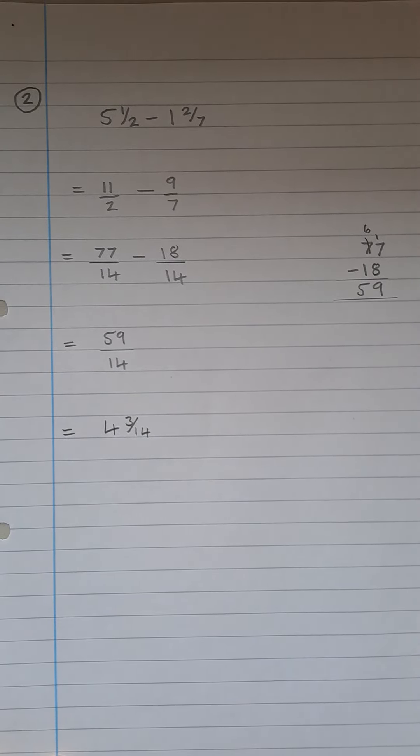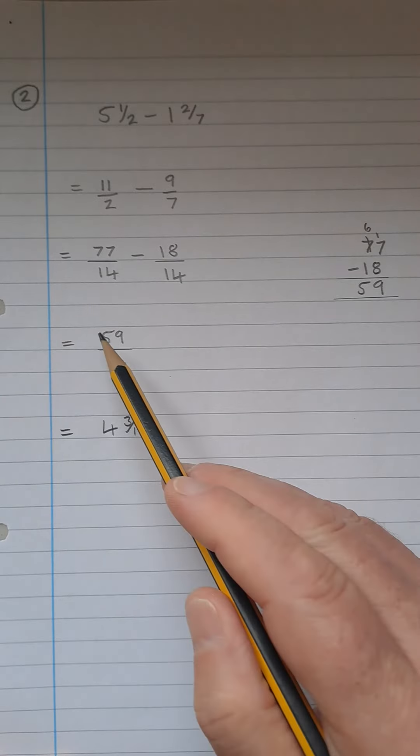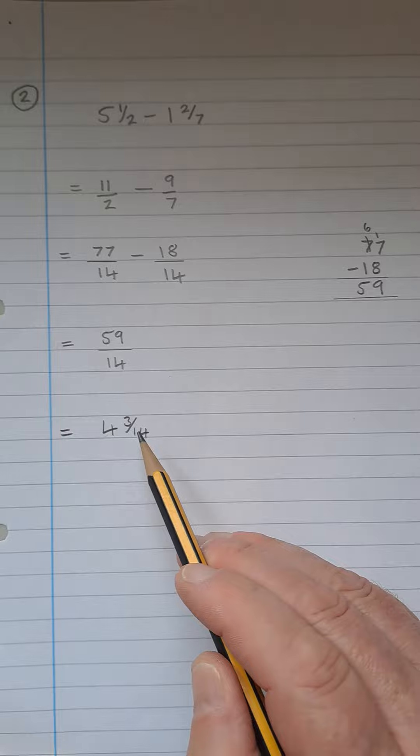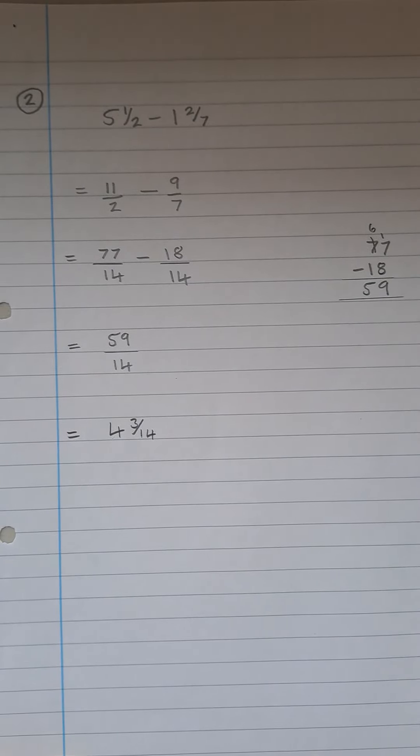That can be left as 59 over 14 or you can change it to a whole number and a fraction which is 4 and 3/14. And that's question 2 done.